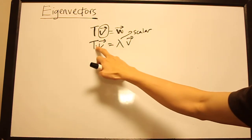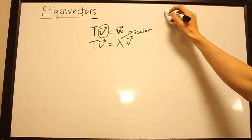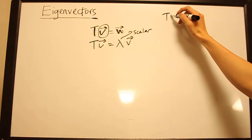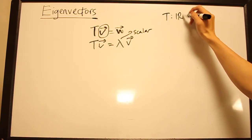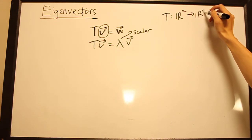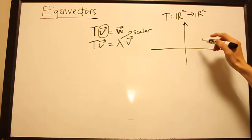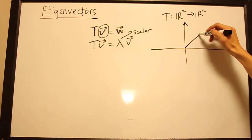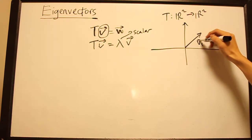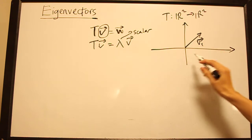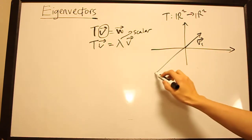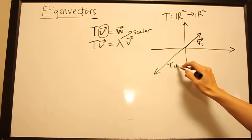So what does that look like pictorially? Let's say I have a linear transformation T which acts on R² and brings it to R². So we can take a look at that. So let's say I have a vector V₁ and the action of T on V₁ just brings it to the reverse. So this is T(V₁).